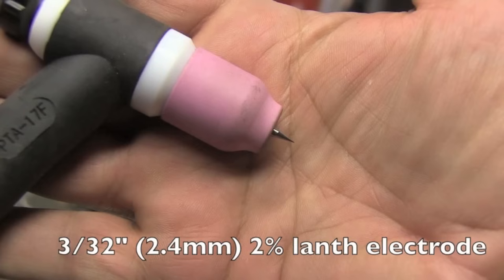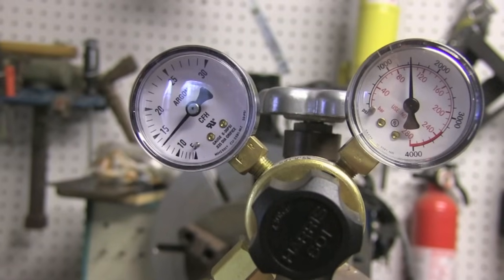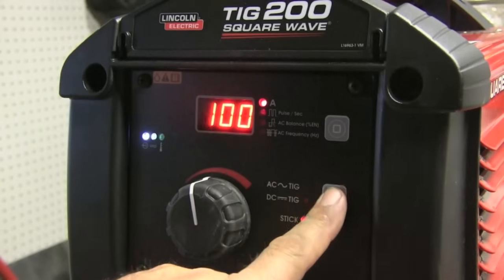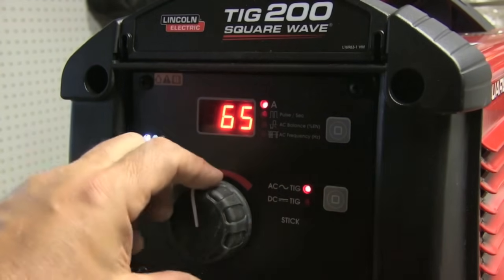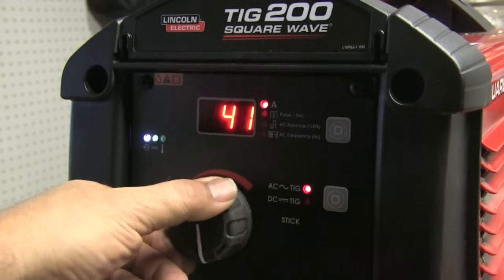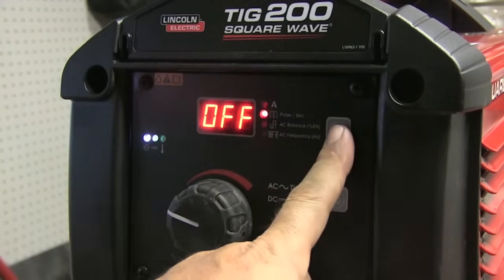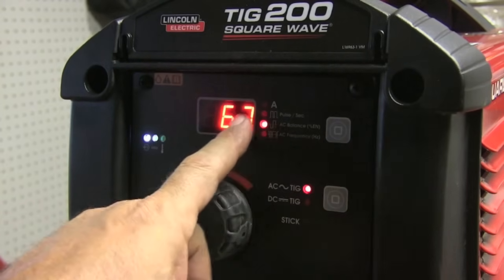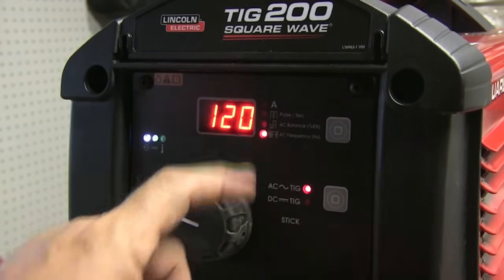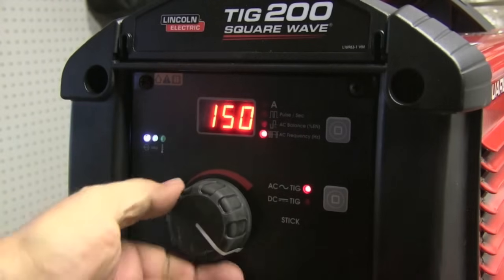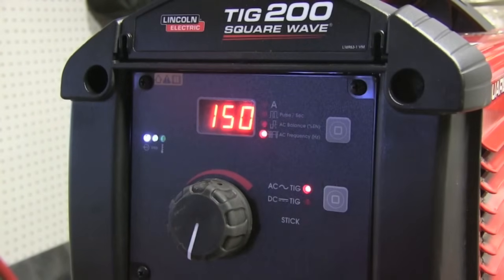I'm only running about 12 or 13 CFH, so let's run down the machine settings. AC TIG, and it's 30 thousandths thick—that's 0.8 millimeters thick—so I'm going to set it at 45 amps, 67 on the AC balance, and AC frequency I'm going to crank all the way up to 150 Hertz. That's the max this machine goes to.